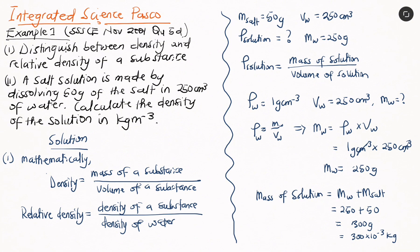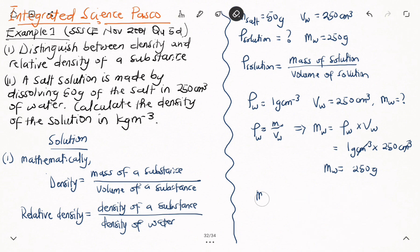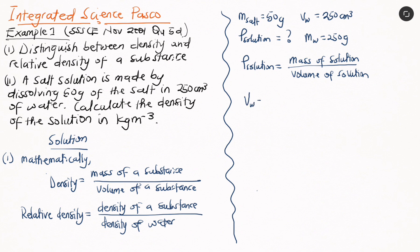Now that we have the mass of the solution, once we add the salt to the water, it dissolves and the volume remains the same. So the volume of the solution will still be 250 cm³. We need to convert that into meters cubed because the question asks for density in kilograms per meter cube. The volume of the solution equals the volume of water, which is 250 cm³.